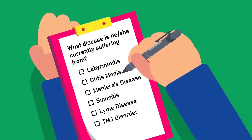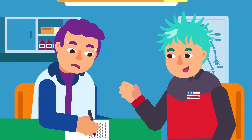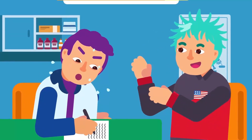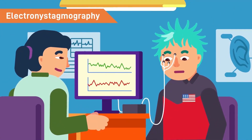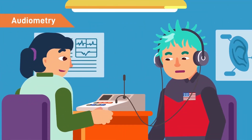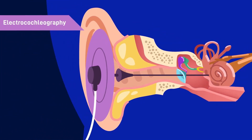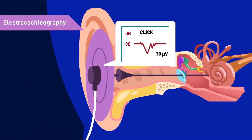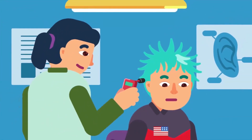Diagnosis: to confirm Meniere's disease, the most important thing is your symptoms and medical history — tell your doctor as detailed as possible. Some of the many diagnostic tests are: Electronystagmography — to check inner ear function based on eye movement; Pure tone and speech audiometry — to confirm hearing loss and rule out the nerve as cause; Electrocochleography — electrodes placed in the ear to measure bioelectrical activity of the cochlea; and Multi-frequency tympanometry — detects the resonance frequency of the tympanic membrane and is non-invasive.